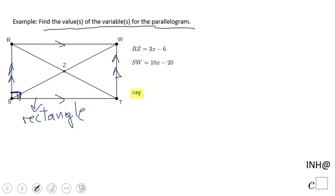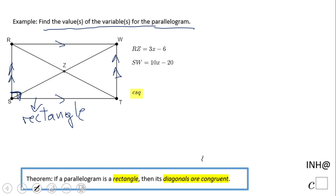Now the diagonals of rectangles are congruent. In other words, RT is congruent to SW. So now let's take a look and we're going to say RT equals SW.